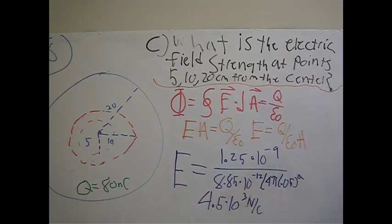We use Q, which we found from the last part of the problem to be 1.25 times 10⁻⁹. This epsilon naught, which is just a constant, 8.85 times 10⁻¹².